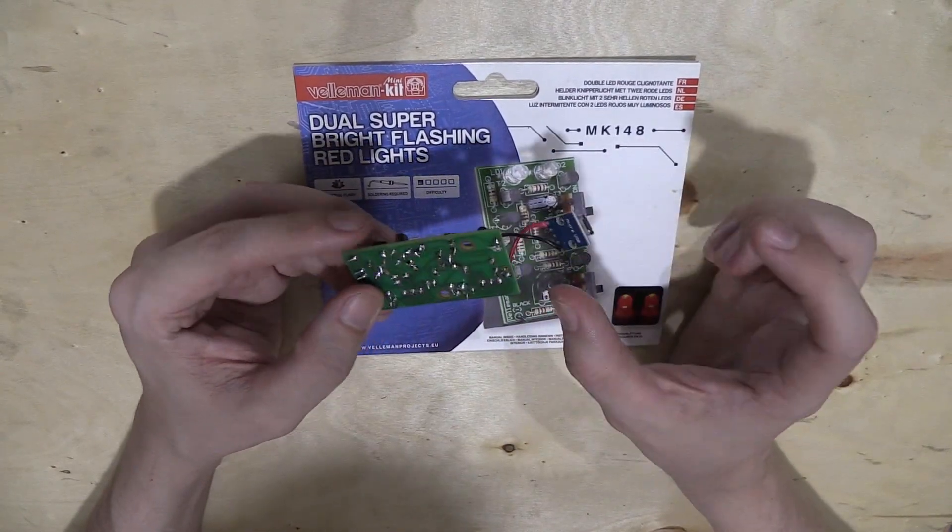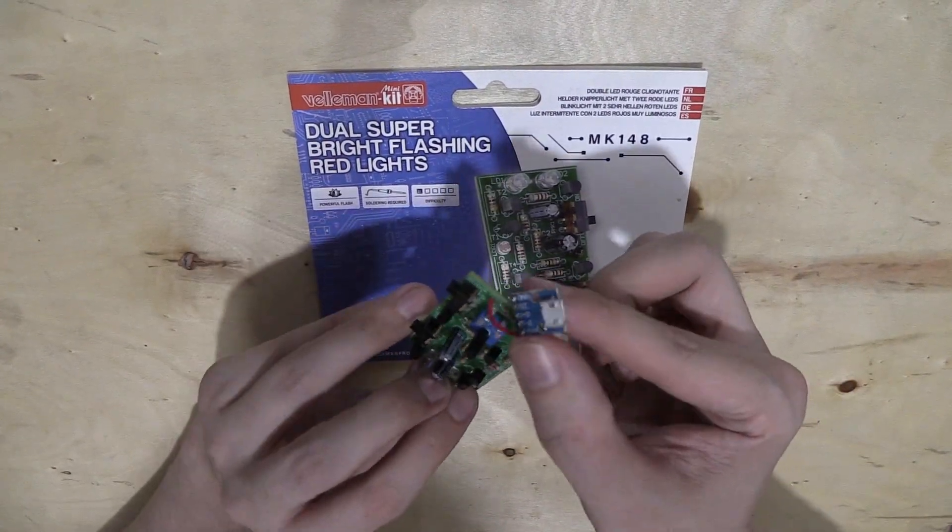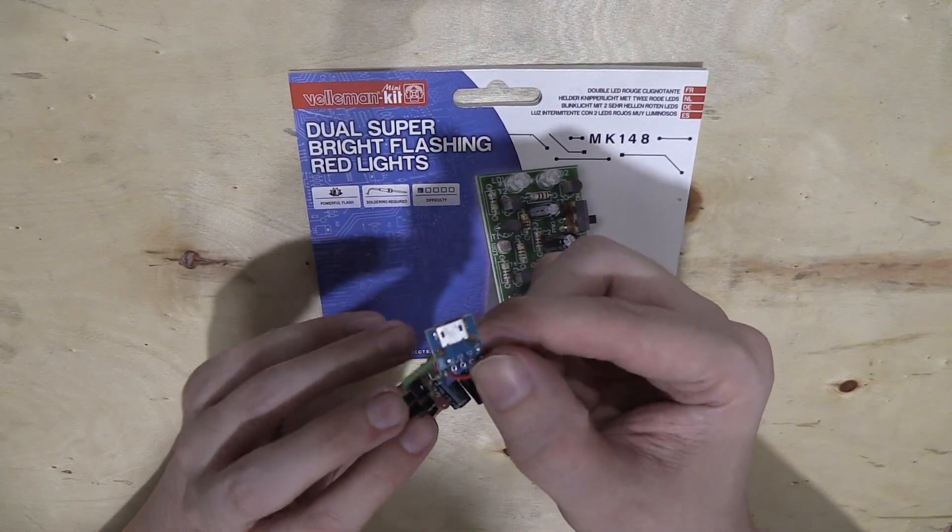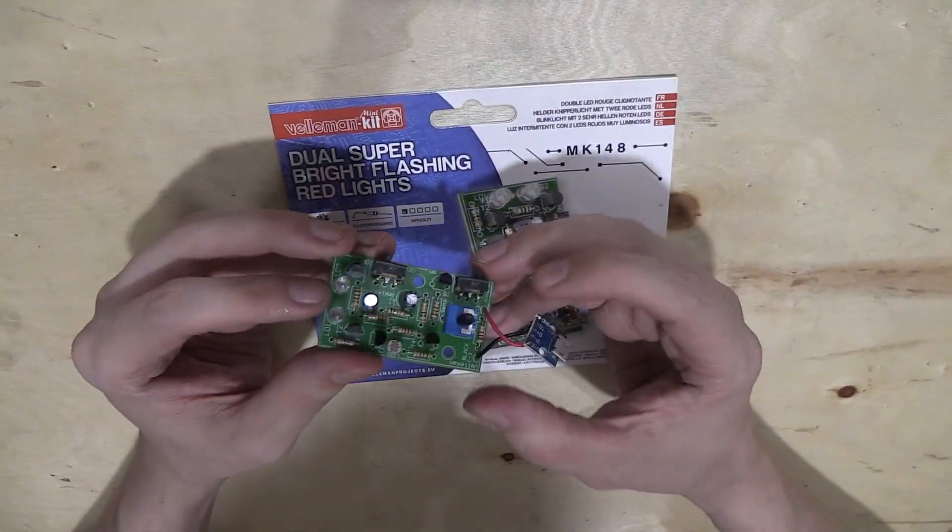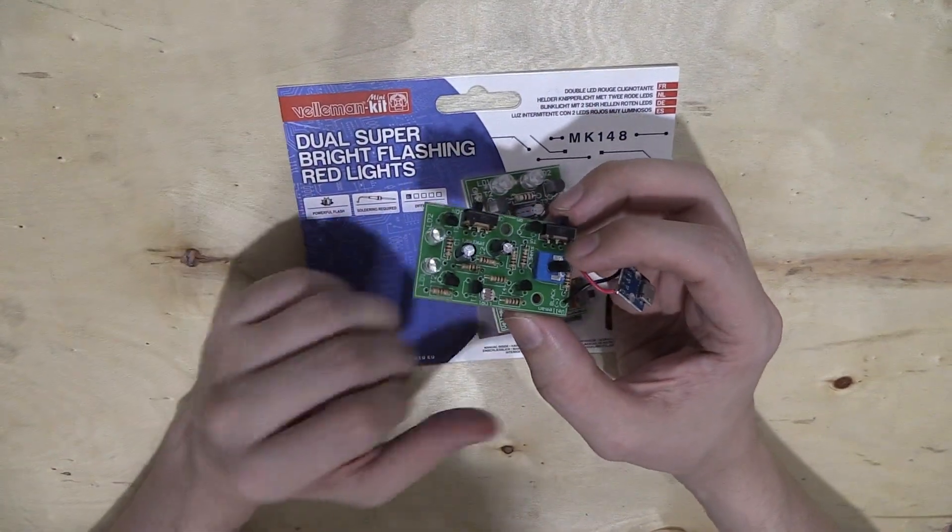Now it comes with a 9V battery holder but I swapped that out for this little board here which is a micro USB connector. Because it's easier to run this from USB than having a 9V battery since how many 9V batteries do you have laying around?